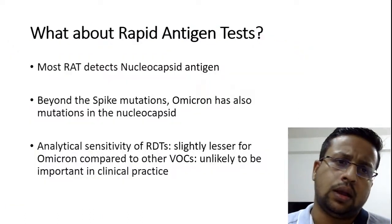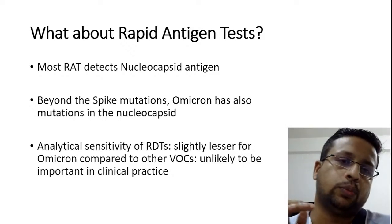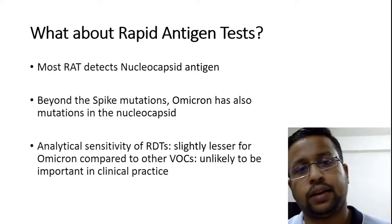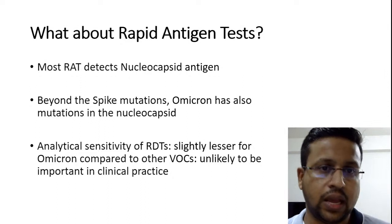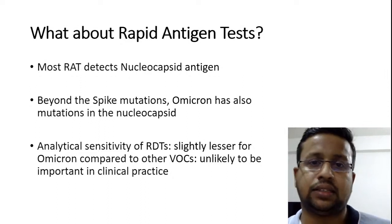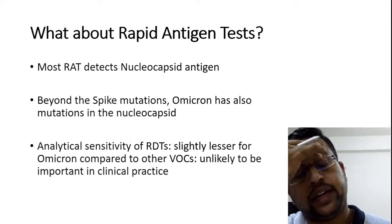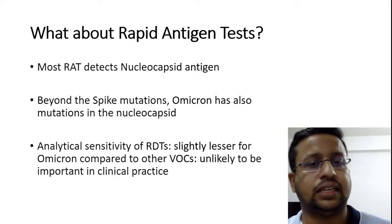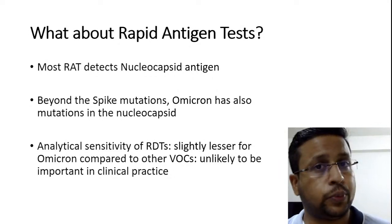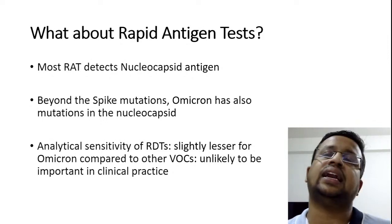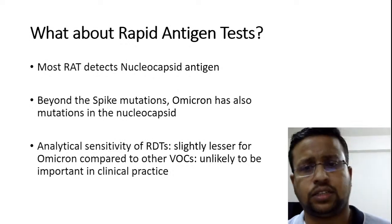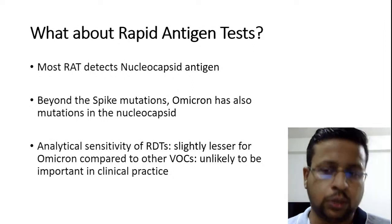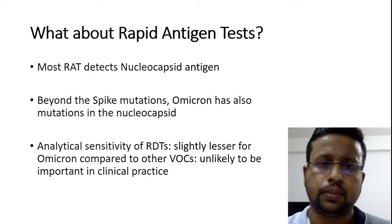Regarding rapid antigen tests (RAT): most RATs detect the nucleocapsid antigen. Omicron also has some mutations in the nucleocapsid protein, so there can be some alteration in sensitivity. Studies have shown a slightly lower analytical sensitivity of rapid antigen tests for Omicron; however, this is very slight and unlikely to be clinically important. You can continue to use rapid antigen tests.